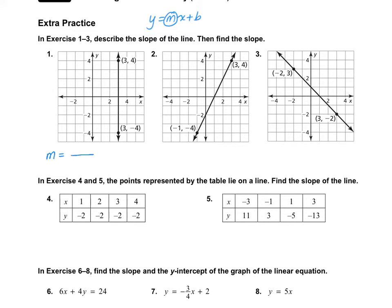For number 1, m equals the y numbers subtracted over the x numbers subtracted. My y numbers are 4 and negative 4, and my x numbers are both 3. When we simplify, we get 4 plus 4 which is 8, and 3 minus 3 which is 0. Anytime you have 0 on the bottom it's undefined, which makes sense because this is a vertical line. If you had 0 on the top, the answer would be 0 slope, which would be a horizontal line.